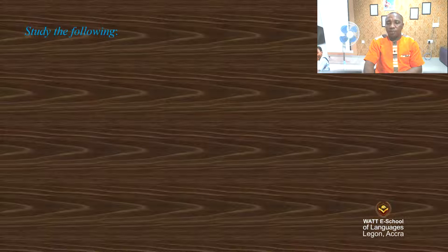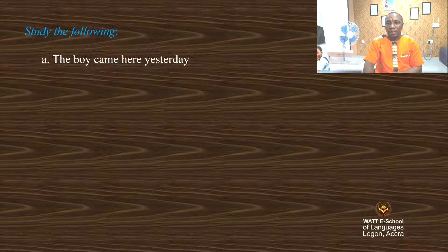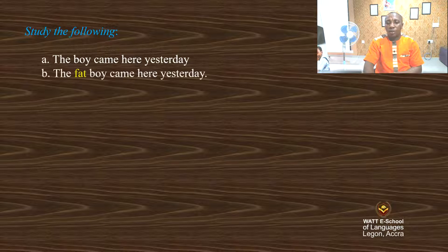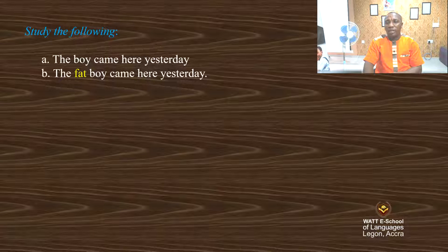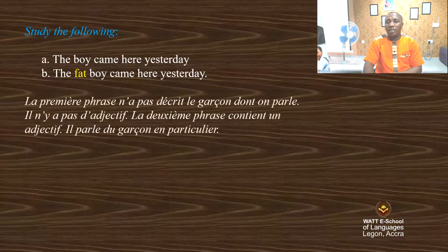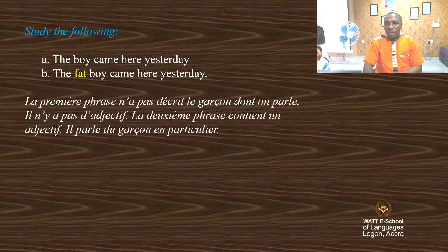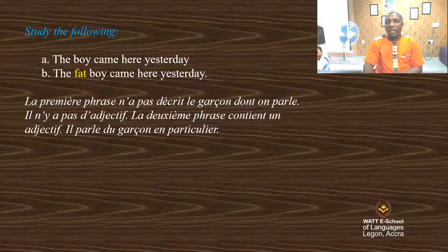Study the following. Sentence one: The boy came here yesterday. Sentence two: The fat boy came here yesterday. When you study carefully the two sentences, you can see that in the first sentence, nothing is describing the boy — you are just mentioning the boy. But in the second sentence, the boy is being described by the word 'fat'. So we can conclude that the word 'fat' is the adjective because it is showing the particular boy we are talking about.